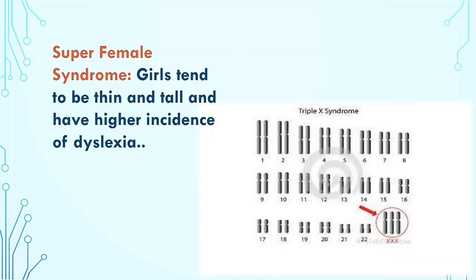In super female syndrome, there is an extra X chromosome present in the sex chromosomes. The girls tend to be thin and tall in nature and have a higher incidence of dyslexia.